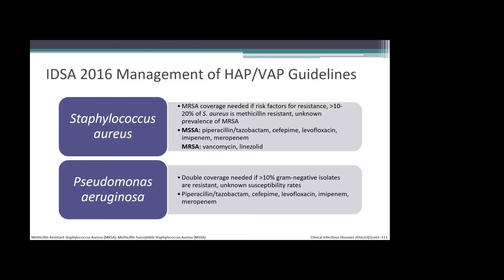MRSA coverage is recommended in patients treated in units where more than 10 to 20% of Staph aureus is methicillin-resistant, or where MRSA prevalence is unknown. Recommended agents for MSSA are piperacillin-tazobactam, cefepime, levofloxacin, imipenem, or meropenem, whereas agents of choice for MRSA are vancomycin or linezolid.